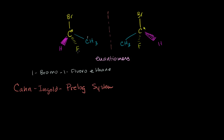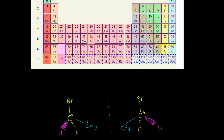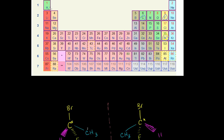Then what you want to do is rank the groups by atomic number. Out of bromine, hydrogen, fluorine, and a carbon — this is what is bonded directly to this carbon — which has the highest atomic number? Bromine is over here. We have bromine at 35, fluorine at 9, carbon at 6, and then hydrogen at 1.